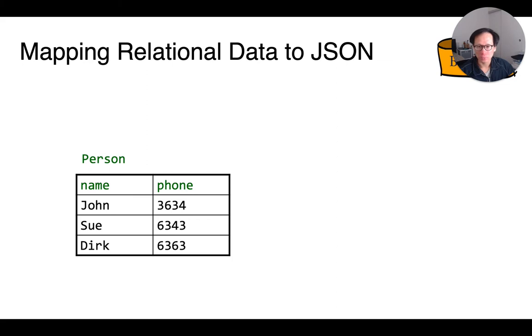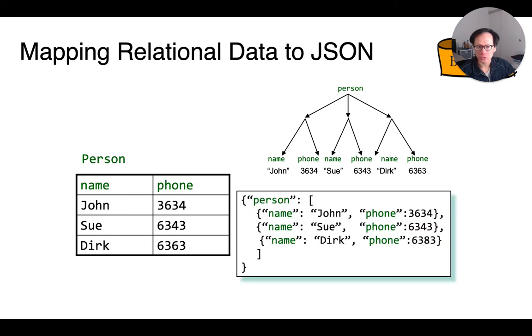Say we have a person relation here. To translate it to a JSON document, we just write it out as a tree like this. And then we just walk the tree from the root and each branch from the root becomes an object. And we get the resulting document shown here on the right.